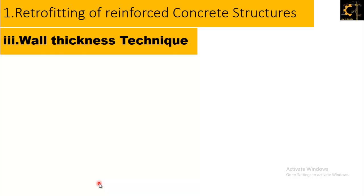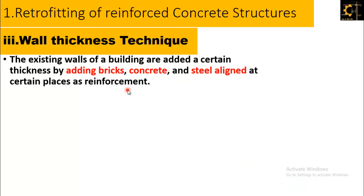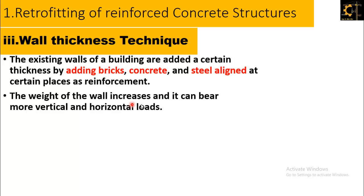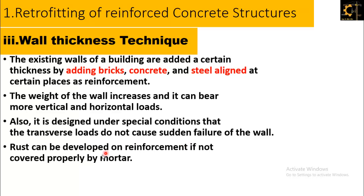The third technique is the wall thickness technique. The existing walls of buildings are given additional thickness by adding bricks, concrete, and steel aligned at certain places as reinforcement. The weight of the wall increases and it can bear more vertical and horizontal loads. It is also designed under special conditions so that transverse loads do not cause sudden failure of the wall. However, rust can develop on reinforcement if not covered properly by mortar.